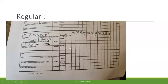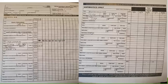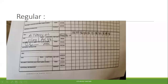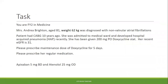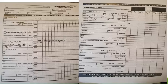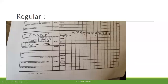Then comes Atenolol. Write it in the regular medications section — not in the antibiotic section, not in the anticoagulant section, but in the regular section. It was written in the task as OD, which is once daily, so prescribe once daily in the morning. Fill in dose, route, and start date. Since these are regular medications, we do not write a stop date. Add your name and signature, and if you want to include additional information such as the eGFR, you can write it there.